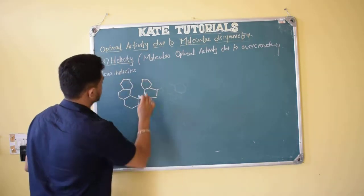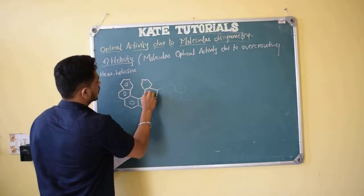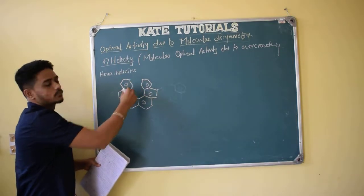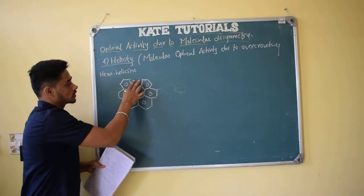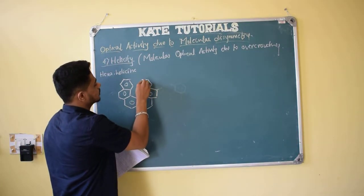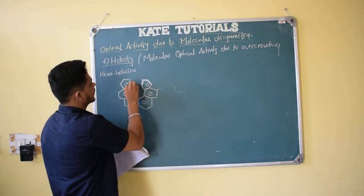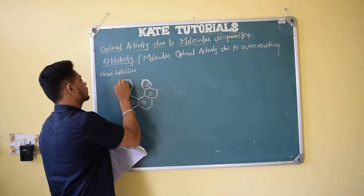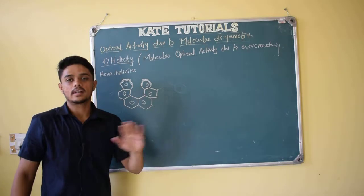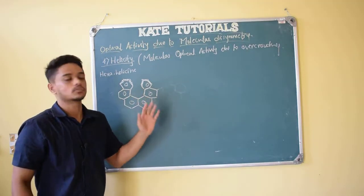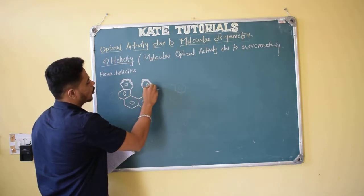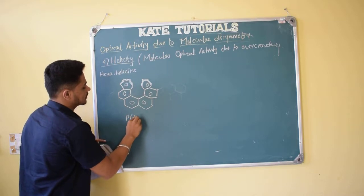This is hexahelicene — it has six rings. Because of these six rings there is repulsion; the terminal rings come very close to each other, and because of this close approximation there is repulsion. So one ring moves above and the other goes below; they are never in a single plane. The plane of symmetry is therefore absent and the molecule becomes optically active. If the right-handed end goes above, it is called P plus.